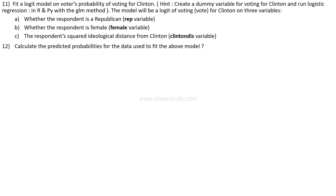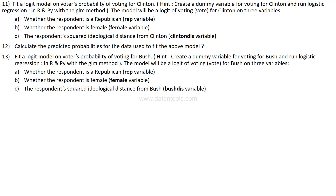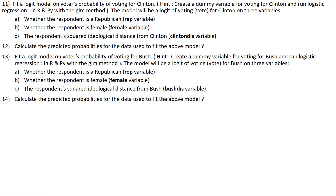Question twelve asks to calculate the predicted probabilities for the data used to fit the Clinton model. Question thirteen is to fit a logistic model on the probability of voting for Bush — create a dummy variable for voting for Bush and run logistic regression using GLM. The model is: logit of vote for Bush on three variables — whether the respondent is Republican, whether the respondent is female, and the respondent's squared ideological distance from Bush.